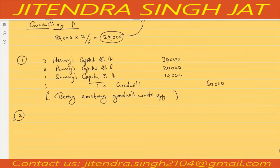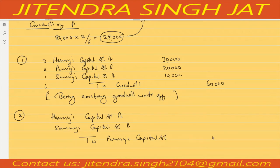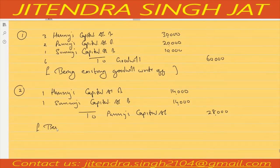Then second entry: we need to give goodwill to Paymi. Haini and Sunny will give. So Haini's capital account debit, Sunny's capital account debit — to Paymi's capital account. Paymi's share is 28,000, given by existing partners in their gaining ratio of 1:1, so 14,000 each. Being Paymi's share of goodwill paid by gaining partners.